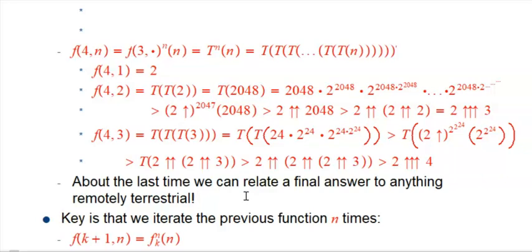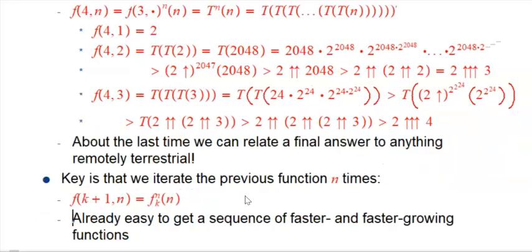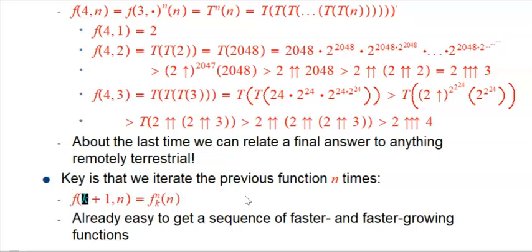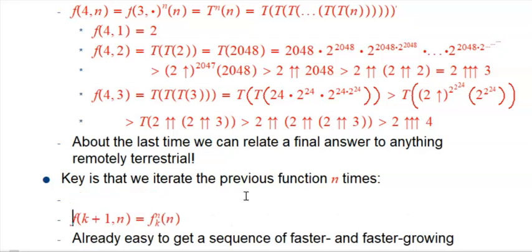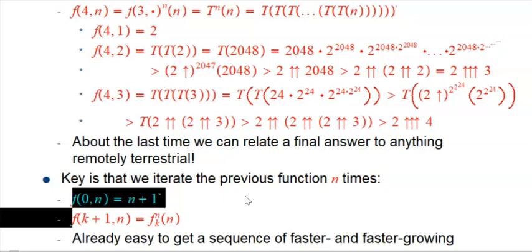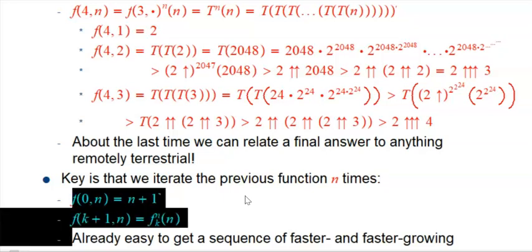So to summarize what we've done so far: the key equation is very simple. To define the K-plus-first function in this hierarchy, we say what it does to input N: take the Kth function iterated N times on N. Literally just that, plus the seed, which was f of 0 of N is the successor of N. That is the entire definition of everything we've done.